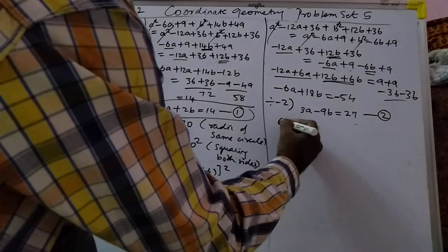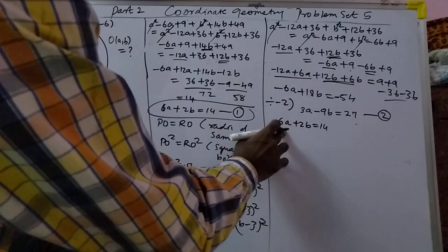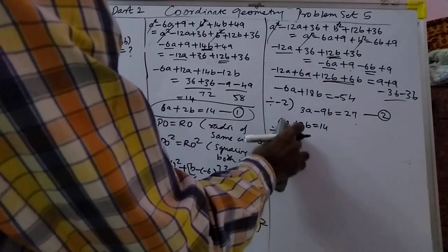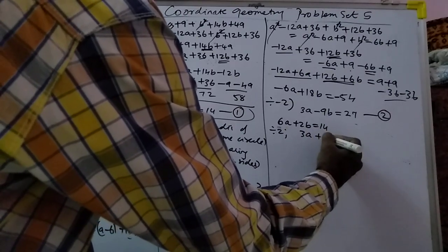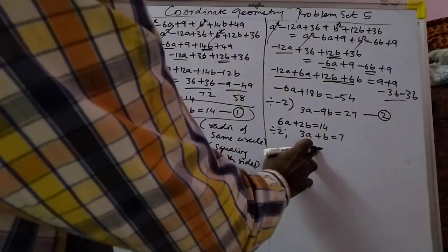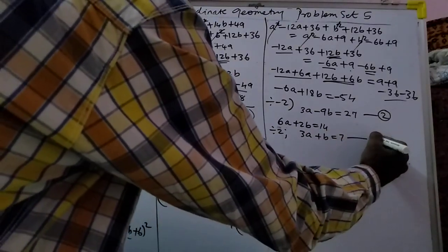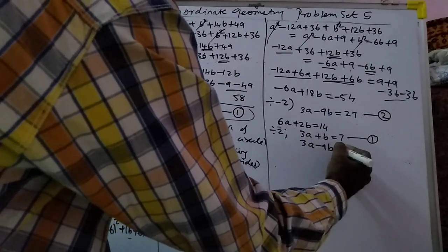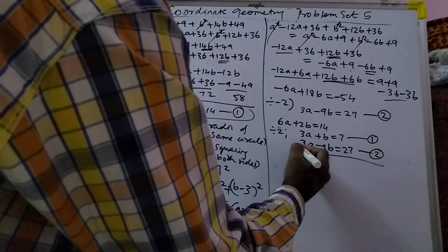Dividing by 2 gives us 3A plus B is equal to 7, which is equation 1. And 3A minus 9B is equal to 27, which is equation 2.